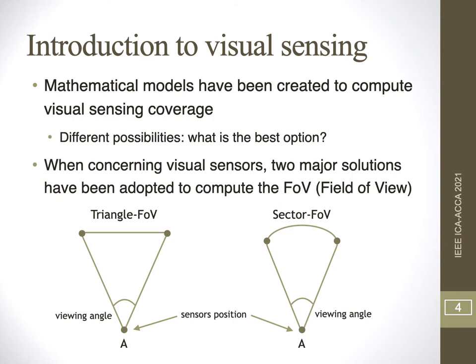Mathematical models have been created to compute visual sensing coverage, and we have different possibilities in the literature. But what is the best option? When it comes to visual sensors, two major solutions have been adopted more often to compute the FOV, the field of view. On the left we have the triangle FOV model; on the right we have the sector FOV. They both have a sensor position defined by vertex A and a view angle, but on the left the area is defined by an enclosed triangle, and on the right we have a sector of a circumference.